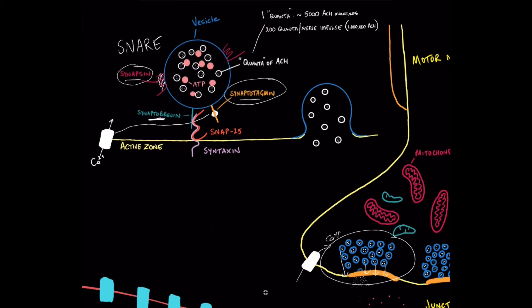Once these contents have been released, this blue membrane of the vesicle is actually kind of recycled. It's saved and kept inside the motor neuron to be filled with other quanta of ACH.